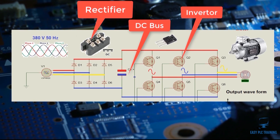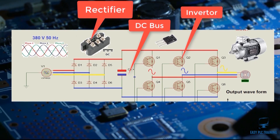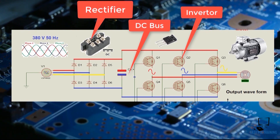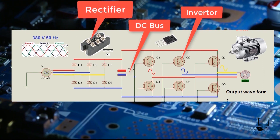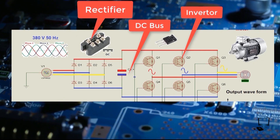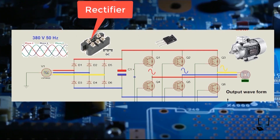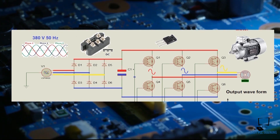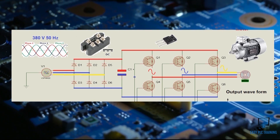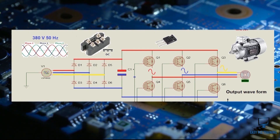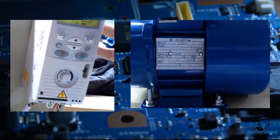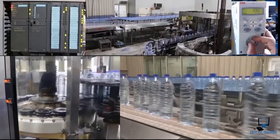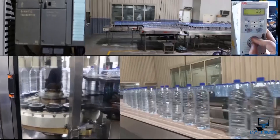In short, there are three elements inside a VFD: first is the rectifier, then the DC bus system, and then the inverter. In the rectification process we have six diodes that convert the AC signal to DC. In the DC bus we use a capacitor to clean that choppy DC signal. Finally, in the inverter stage, the IGBTs convert the cleaned signal back to AC, which is then ready for your motor to use.